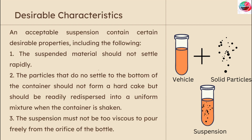What are the characteristics of an ideal suspension? An acceptable suspension contains certain desirable properties including the following: the suspended material should not settle rapidly; the particles that do settle should not form a hard cake but should be readily redispersed into a uniform mixture when the container is shaken. The suspension must not be too viscous to pour freely from the orifice of the bottle.